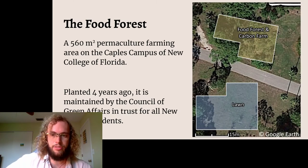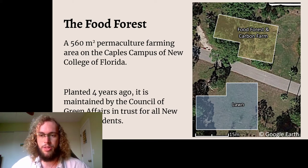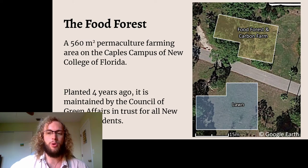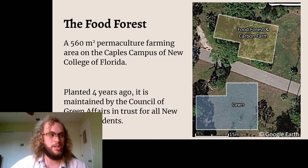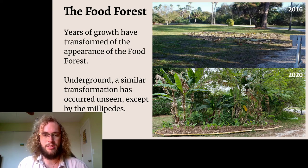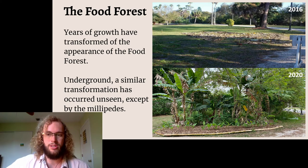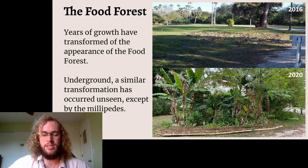The food forest itself at New College is a relatively small area. You can see here a satellite photo of the Kaples campus provided by Google Earth with the approximate area outlined. The food forest was first planted in 2016, so it's about four years old, and it's maintained by the Council of Green Affairs through both paid student work and volunteers. Over the last four years, you can see that there have been some big changes in the food forest — it started as just a lawn, and now it has many different stories of plants all growing. But underground, what you cannot see in this photo, is a similar incredible change has occurred in the soils.